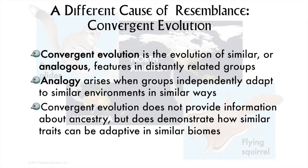Convergent evolution is a different type of evolution, but evolution nonetheless. In convergent evolution, similarities arise not by shared common ancestry, but by shared common utility. We call these features analogous rather than homologous. It will behoove you to understand the difference between homology and analogy, because I will certainly ask you about it. When similar habitats arise in different parts of the planet, we see similar structures may appear, but not because of a shared common ancestor.